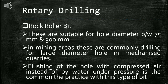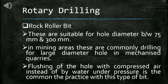The rock roller bit is the third subtype of rotary drilling. These are suitable for hole diameters between 75 mm to 300 mm. In mining areas, they are commonly used for drilling large diameter holes in mechanized quarries. Flushing of the hole with compressed air instead of water under pressure is the common practice with this type of bit.